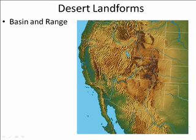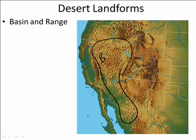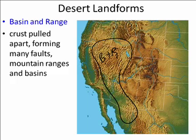Desert landforms. In the United States, there are two distinctly different areas that contain deserts. One of them is basin and range, which is this area outlined here. Basin and range is created because the crust is pulling apart. As it pulls apart, many faults form, and those faults will down-drop basins with mountain ranges in between.